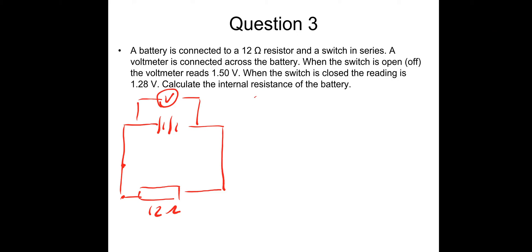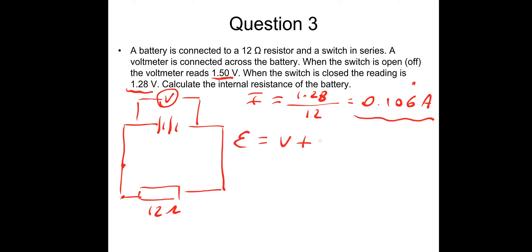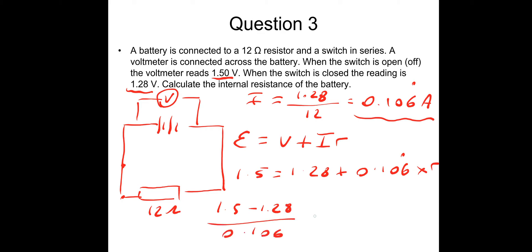We need the current in the circuit. The voltage across the circuit is 1.28 V (the EMF is 1.5 V when open). Current equals 1.28 divided by 12, giving 0.106 recurring amps. Now using EMF equals V plus Ir: 1.5 equals 1.28 plus 0.106 recurring times r. So r equals (1.5 minus 1.28) divided by 0.106 recurring, giving an internal resistance of 2.1 ohms.